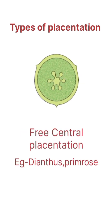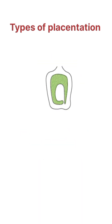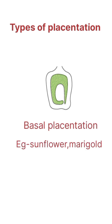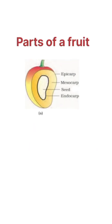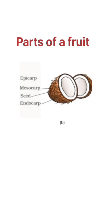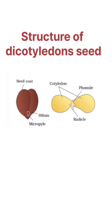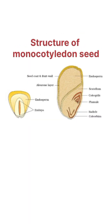Next is free central placentation, next is basal placentation. Parts of fruits — main example is mango. Next is coconut. Structure of dicotyledonous seed, next is structure of monocotyledon seed.